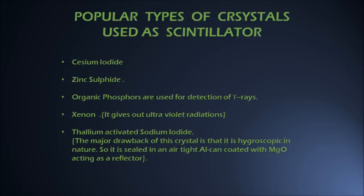The most popular crystal used as a scintillator is thallium-activated sodium iodide, because it has more efficiency in comparison to other crystals used for this purpose. However, the major drawback of this crystal is that it is hygroscopic in nature — that is, it can get spoiled due to moisture. Due to this reason, this crystal is sealed in an air-tight aluminum can which is coated with magnesium oxide acting as a reflector.